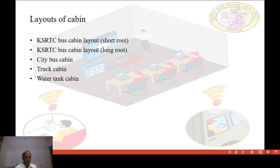Number 2, KSRTC bus cabin layout for long route. In this layout, front entry's door is provided for passenger. Seating capacity is reduced by 2 plus 2.